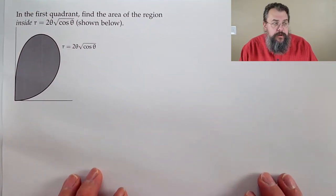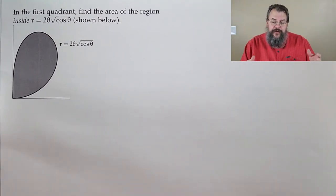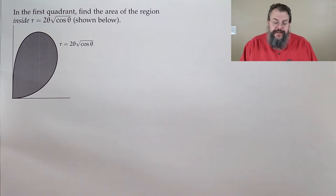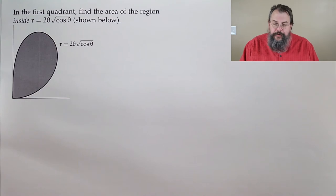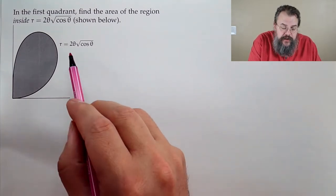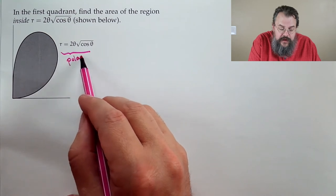Another problem. In the first quadrant, find the area of the region inside r = 2θ√(cos θ), shown below. We see R and θ together, so this is a polar curve. It comes out and loops and comes back.